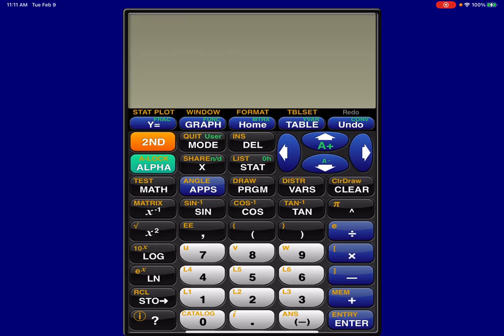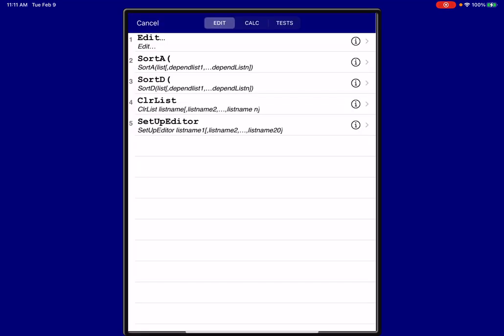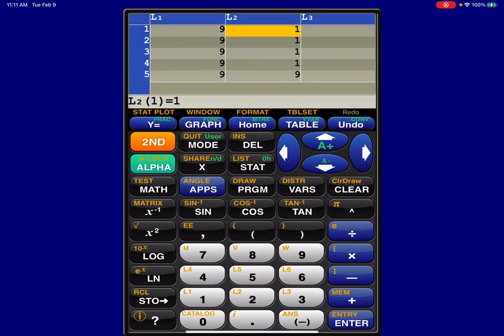Now I want to compare that to a different data set. So let me show you what's in L2. So here I have 1, 1, 1, 1, and then 9. And if we think about how this works, the min is 1, Q1 is 1, the median is 1. Now Q3 is going to be the average of 1 and 9, so that's going to be 5. And then the max is going to be 9.